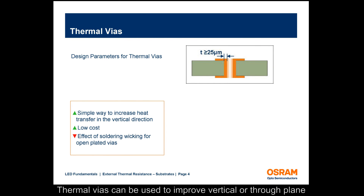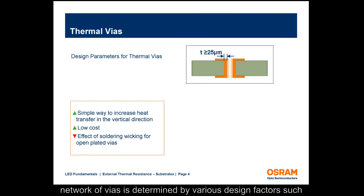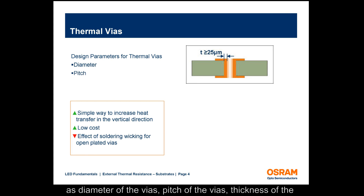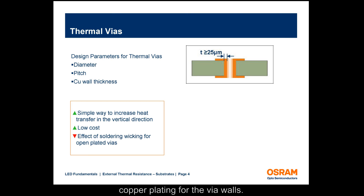Thermal vias can be used to improve vertical or through-plane heat conduction in PCBs. The thermal transfer capability of a network of vias is determined by various design factors such as diameter of the vias, pitch of the vias, and thickness of the copper plating for the via walls.